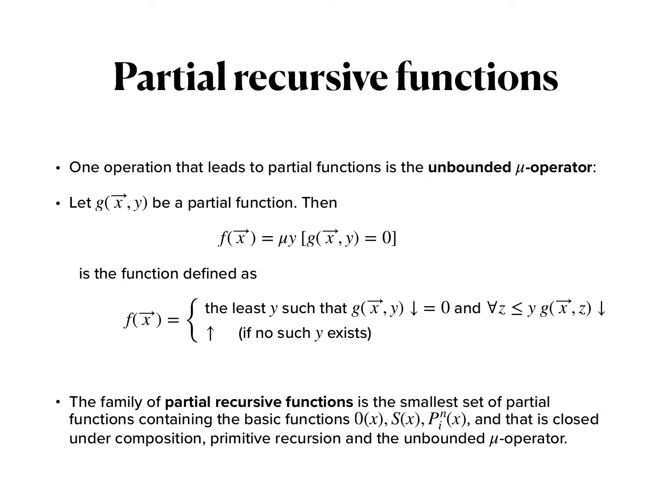One operation that can lead us out of the total functions and to partial functions and yet is effective is the unbounded μ-operator. We've already seen the bounded μ-operator where we essentially looked for the smallest witness to a statement bounded by a given bound. Now we get rid of this bound, which corresponds essentially to an unbounded search that can lead to an infinite loop if we never find a witness for the condition we're looking for.